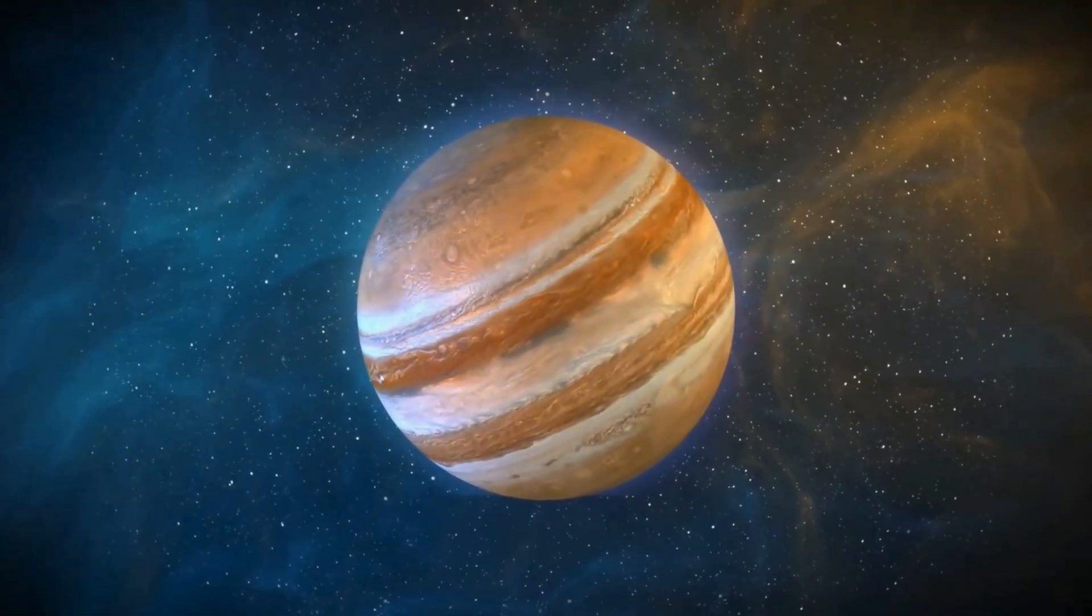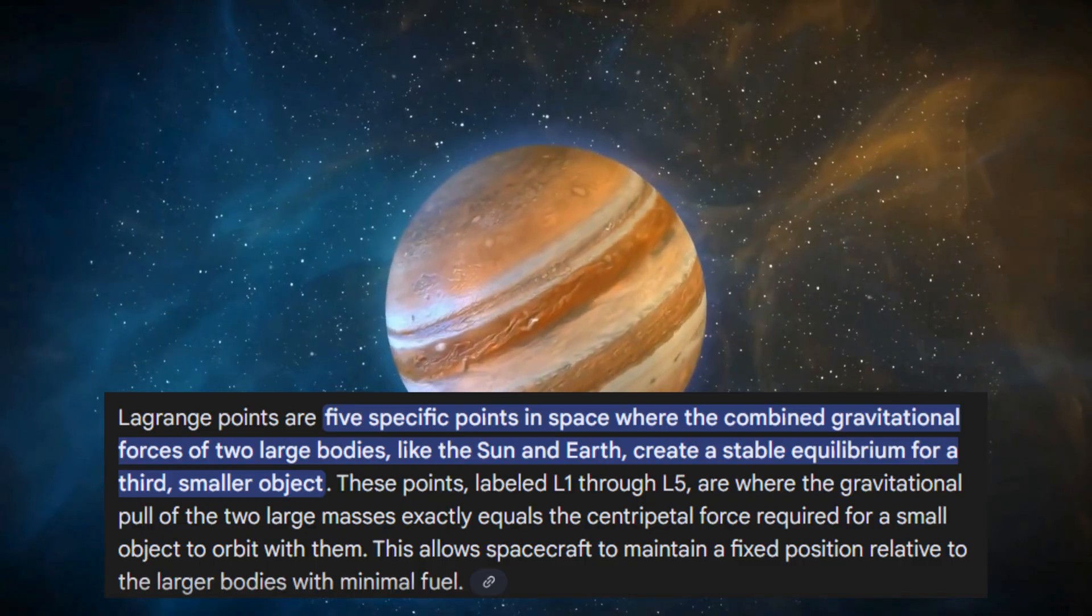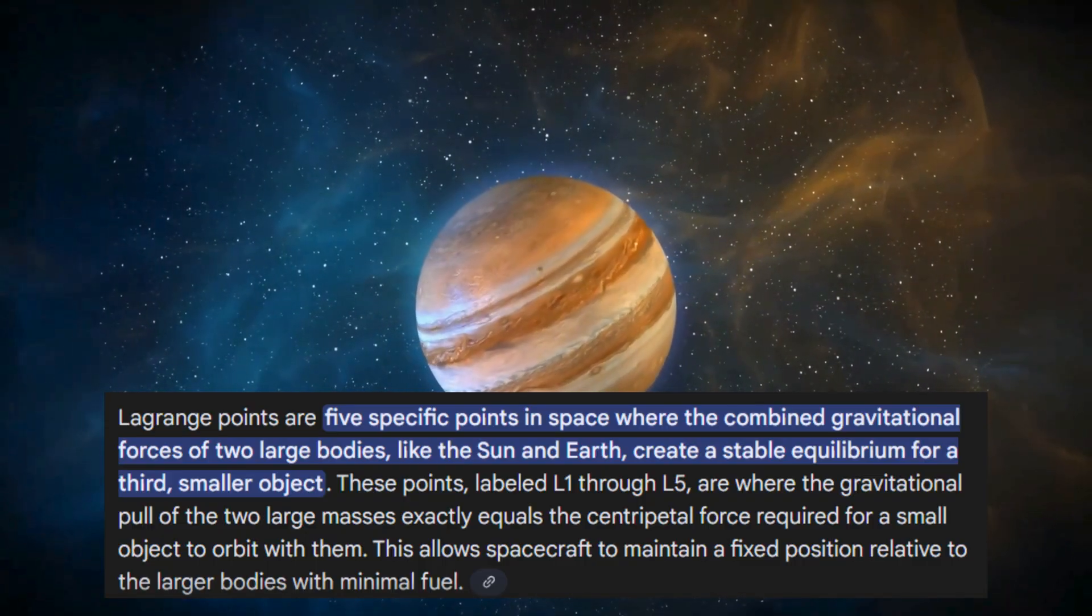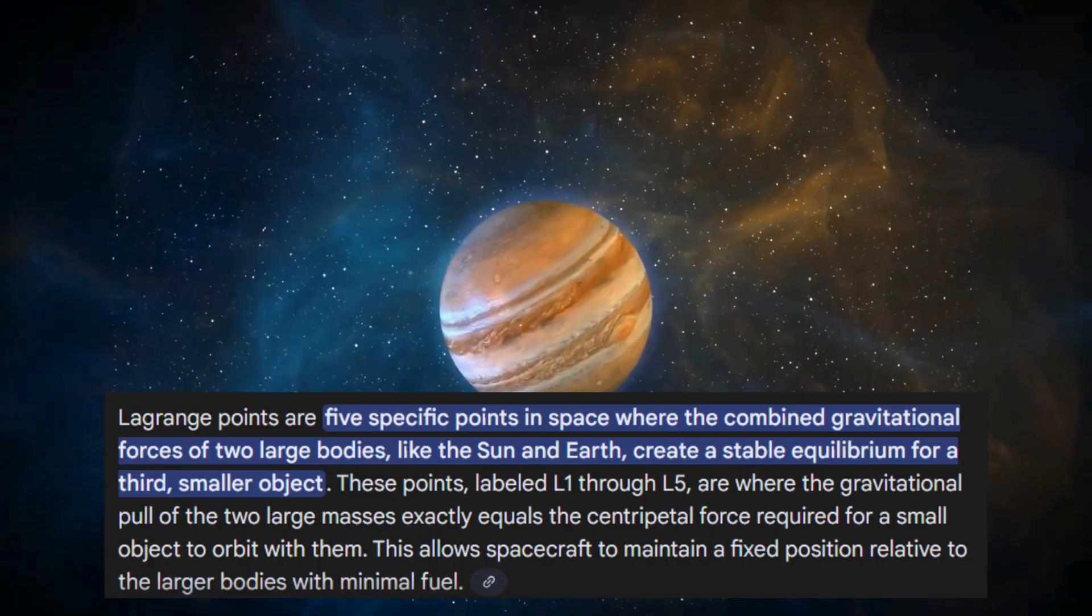So why does that matter so much? Because sitting right at the hill radius are special gravitational balancing points known as Lagrange points. These are the sweet spots of orbital mechanics.